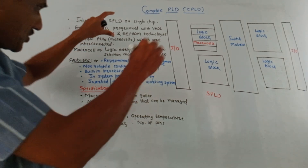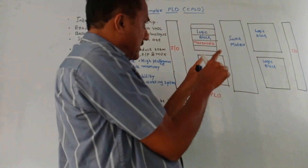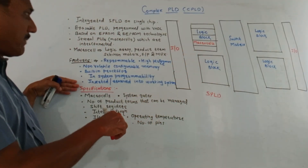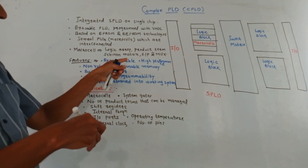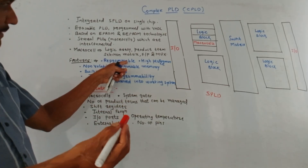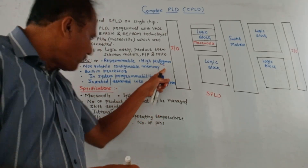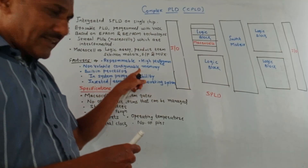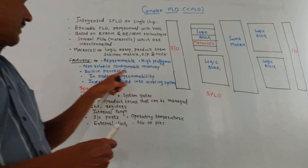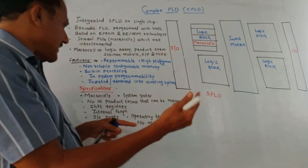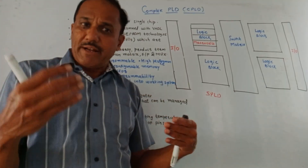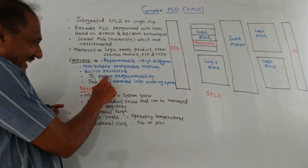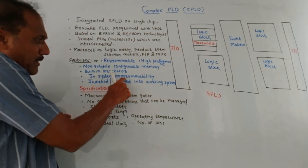Now the features. This is about the generalized architecture of CPLD. Features of CPLD: this device is reprogrammable, it has high performance, it has non-volatile configurable memory, and it has a built-in processor which can be used to perform arithmetic and logical operations.